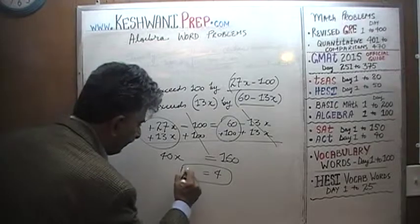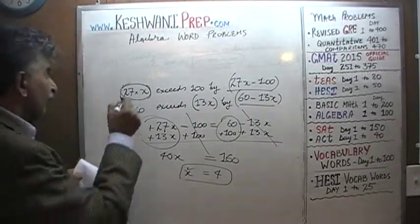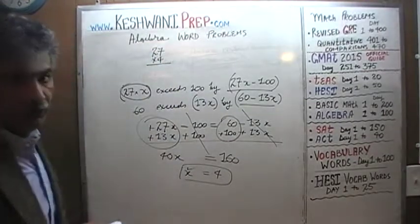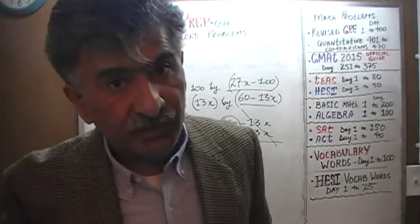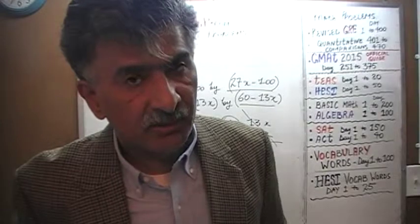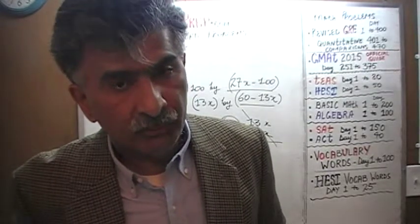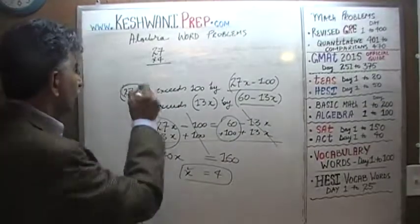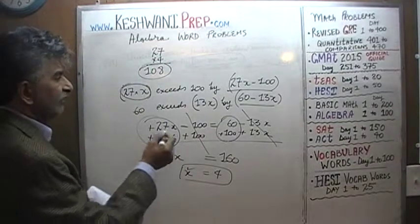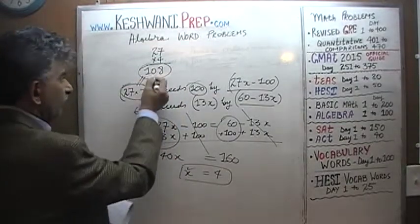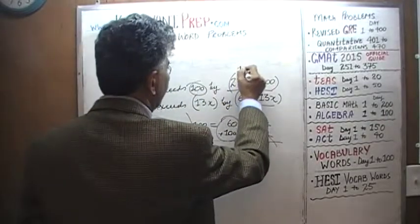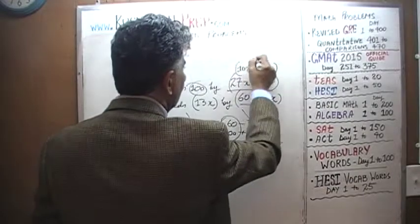We're claiming X equals 4. So 27 times 4: we know 25 times 4 is 100, and 27 is 2 more than 25, so 27 times 4 is 108. How much does 108 exceed 100? It's 108 minus 100, which is 8.